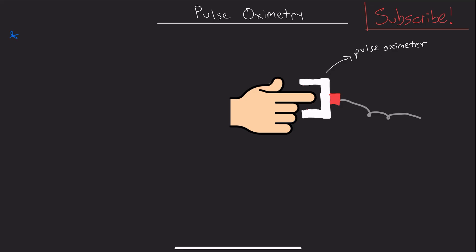The first concept we need to know, and really the major concept of this whole thing, is that pulse oximetry works by measuring light absorption.